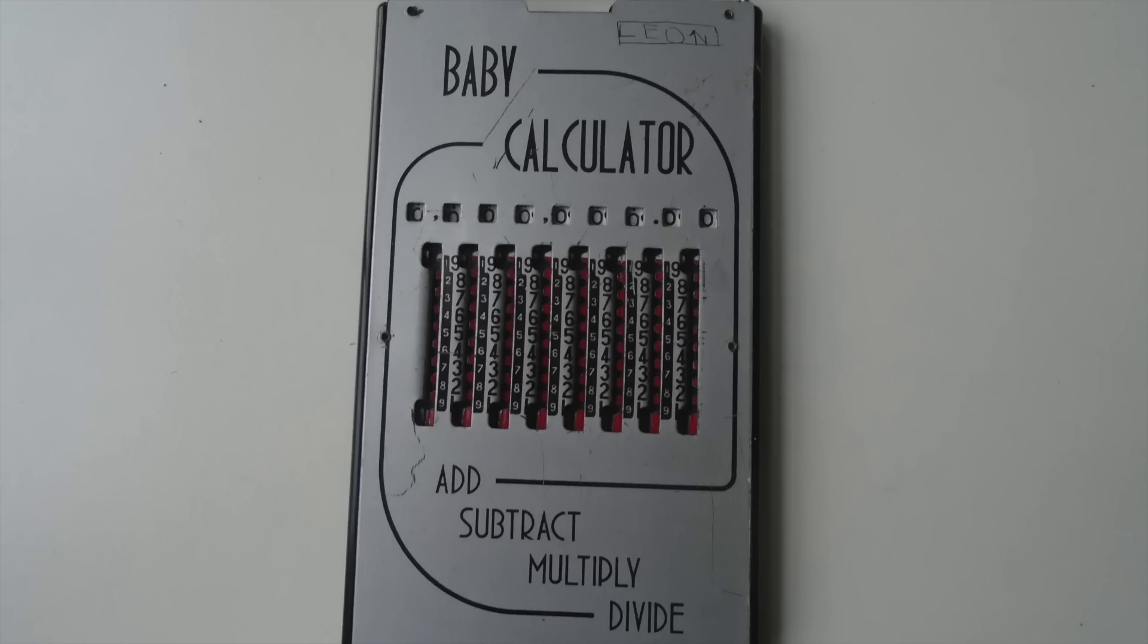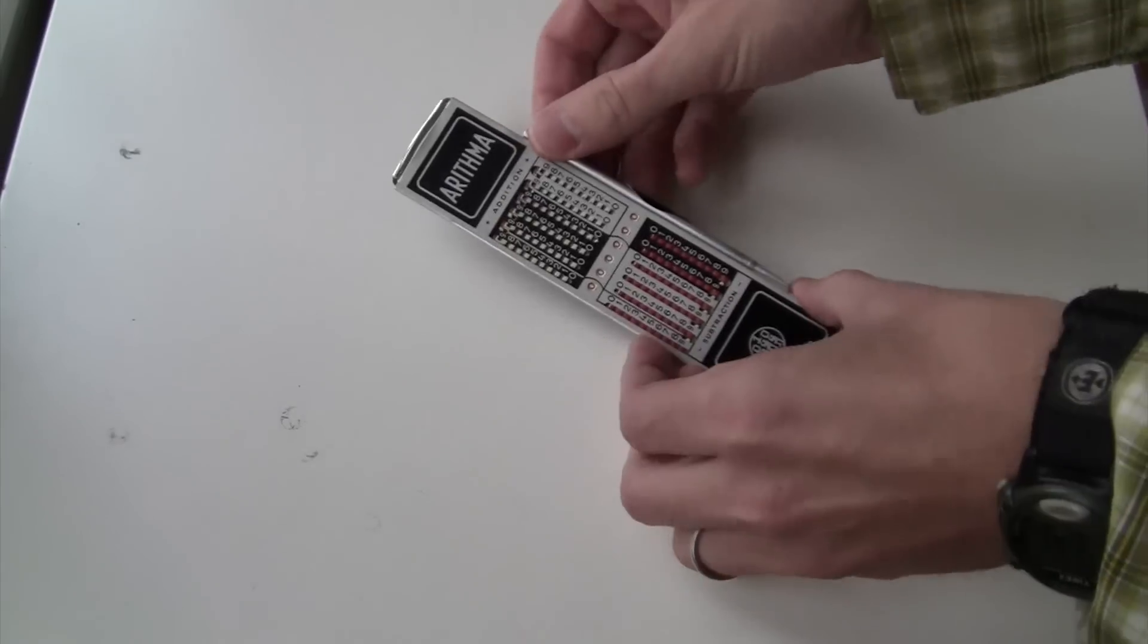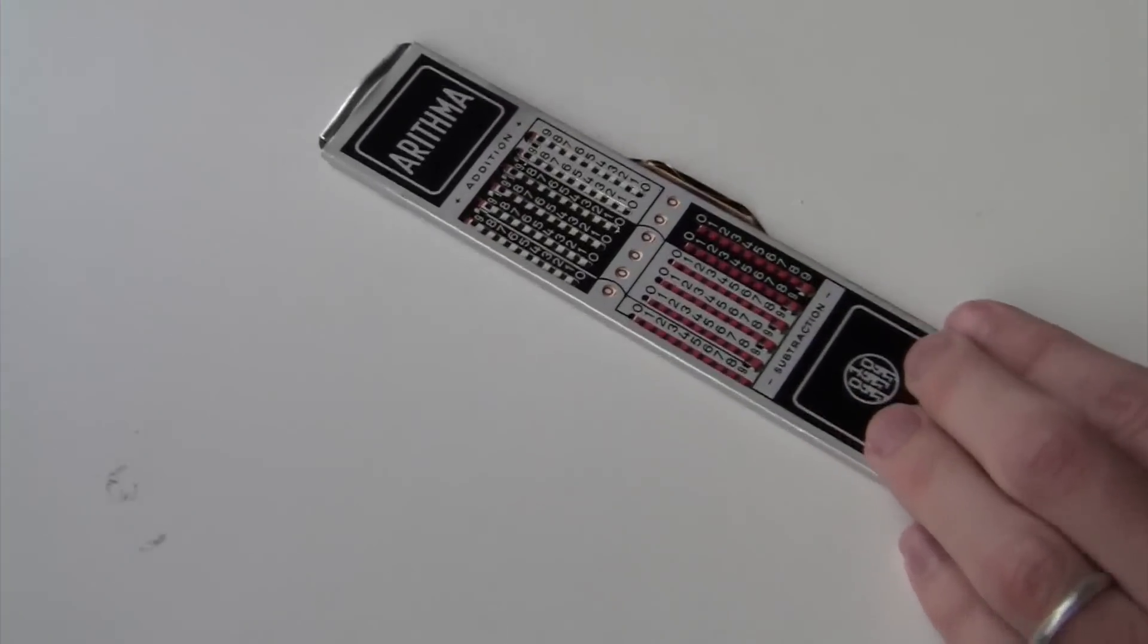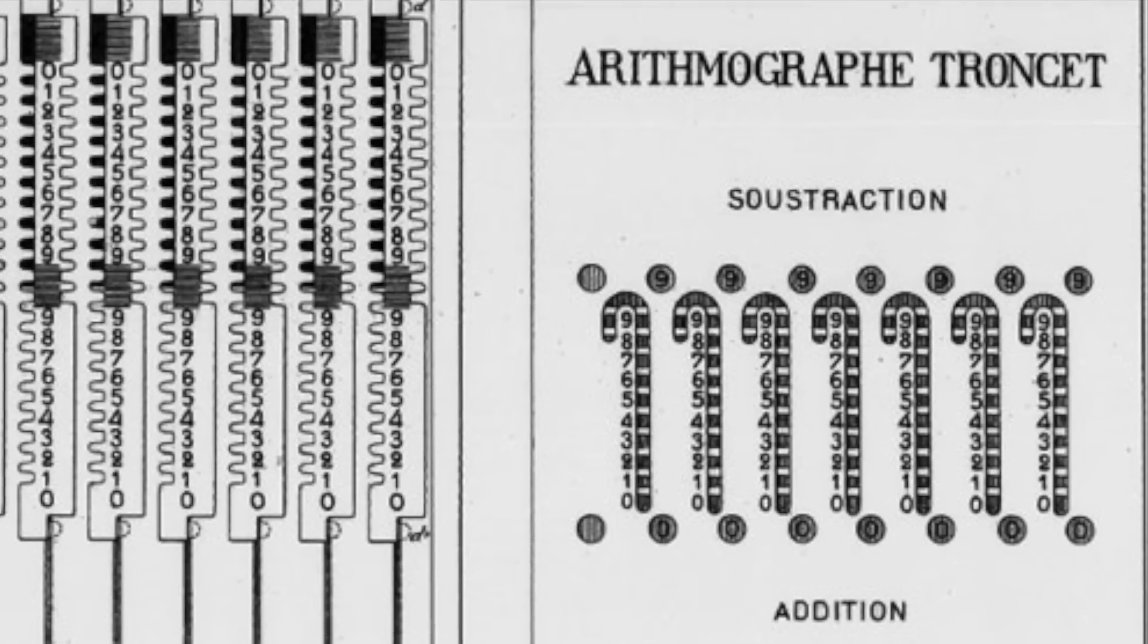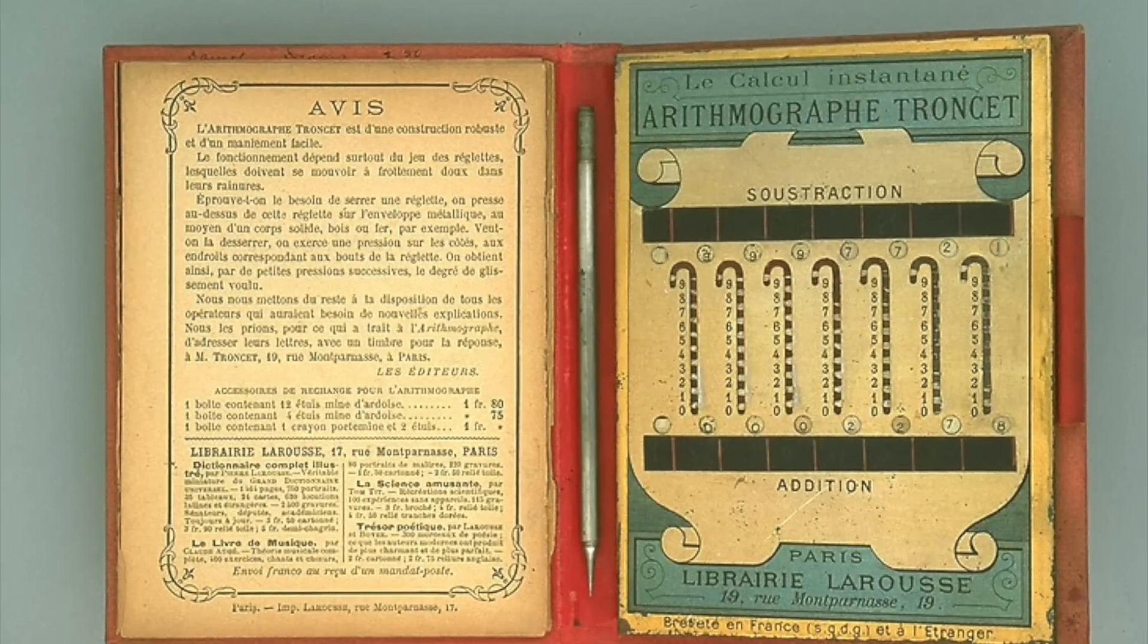And as other corporations started making devices like this, the word adiator came to be used as sort of a generic term for any kind of sliding adder. So I'm going to call this thing an adiator. The adiator is a descendant of a basic design by Frenchman Louis Troncet that he patented in 1889. He called it the arrhythmograph.